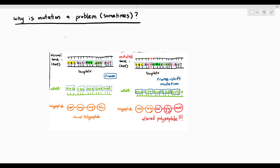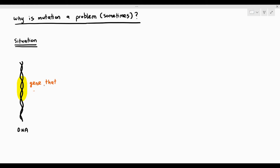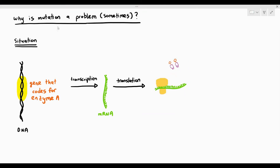So what's the big deal if the primary structure of the protein is affected? These are not real-life examples, but they can be used as models to describe how gene mutation can actually affect living organisms — these are the potential effects. So let's say we have a DNA molecule, and the highlighted region is called a gene, and the function of this gene is it codes for enzyme A. When the gene undergoes transcription, it produces the mRNA, and when the mRNA is translated, the tRNAs bring the amino acids to the ribosomes, and thus a polypeptide is produced. This is the primary structure.